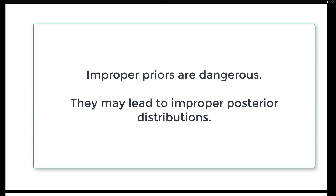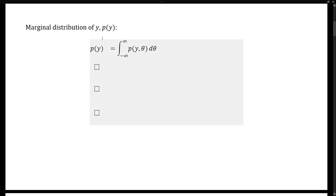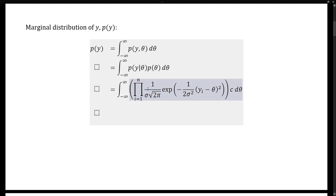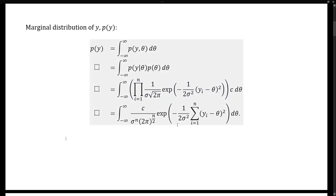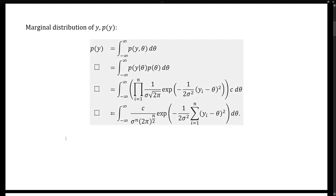Because we can't do the conjugate trick, we first need to determine the marginal density of the data y. Recall that the marginal density of y is simply the integral of the joint density over the support of the parameter theta. The joint density can be written as the product of the data density multiplied by the prior. The data density is going to be the product of the marginal densities, and the prior is simply the constant c. If we simplify the joint density and then move out any constant terms, we're left with this expression here.